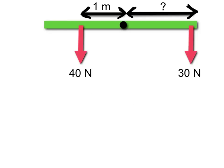This is a very common problem that involves using the principle of moments. You'd be told that this system is balanced, which means the moment due to one force will be equal to the moment due to the other force, and you can use this fact to work out the missing distance. There's one anticlockwise moment from the 40 newton force and one clockwise moment from the 30 newton force.